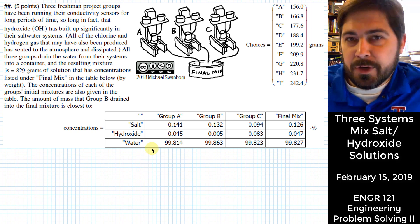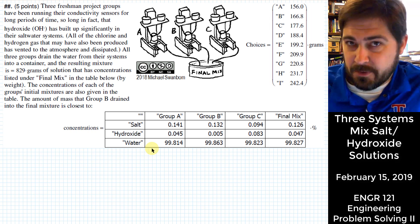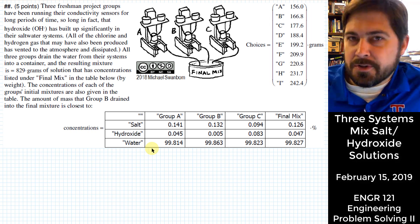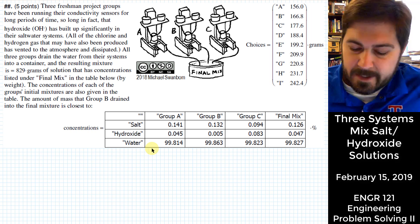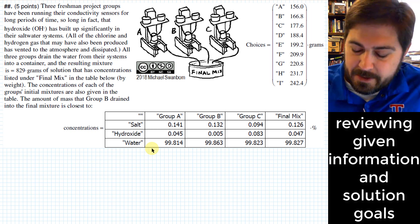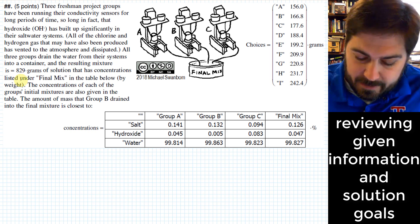We're going to work an example problem here where three project groups in this 121 class have been running their fish tanks for long enough that not only do they have salt in the systems, they also have built up significant amounts of hydroxide OH- in their systems. And so that means these systems that they are running actually have three different types of material in the system rather than two as you would in just a plain saltwater system.